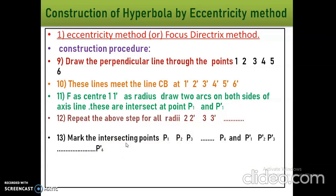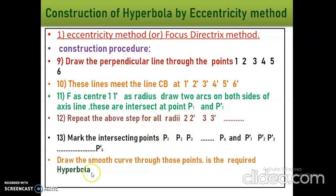If we join all these points — P1, P2, P3 and P1 dash, P2 dash, P6 dash — we get the hyperbola shape. Draw a smooth curve through points P1, P2, P3... P6, and P1 dash, P2 dash... P6 dash to get the required curve, which is the hyperbola.